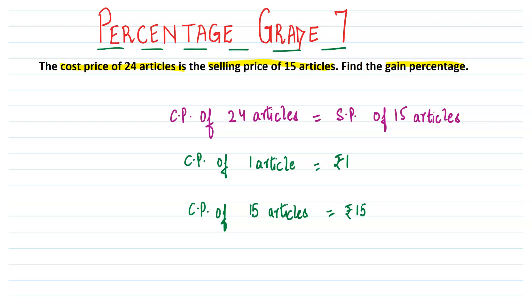And can you now tell me what would be the selling price of 15 articles? Just pause the video and think about it. Selling price of 15 articles is equal to CP of 24 articles.